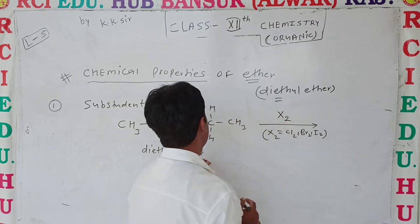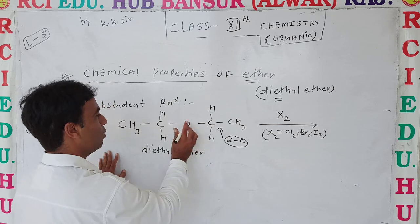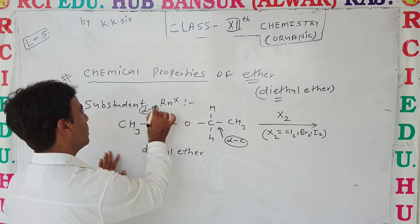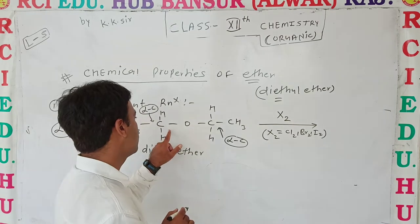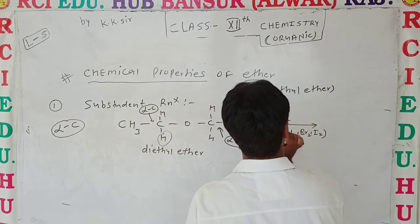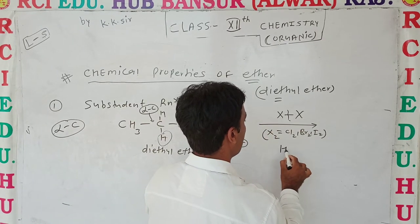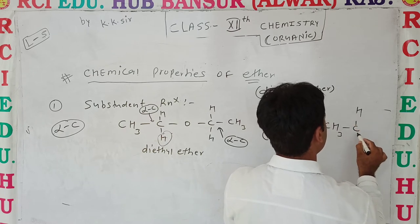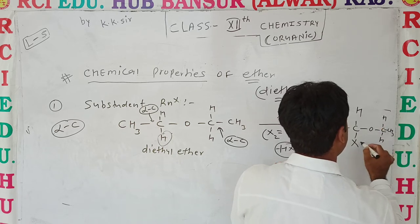When X2 is used, the reaction takes place on the alpha carbon — the carbon adjacent to the oxygen. Substitution first takes place on this alpha carbon. There will be removal of H and attachment of X, forming a mono-halide product: CH3-CHX-O-CH2-CH3. That is the mono-halide of diethyl ether.